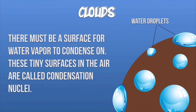For a cloud to actually form, there must be surfaces for water to condense on. These tiny surfaces in the air are called condensation nuclei. They can be anything microscopic that's been suspended in the air — most of the time it's dust, ash, or smoke particles, but it can also be salt, bacteria, and other aerosols. These provide the place for water droplets to cling to and begin to form clouds.